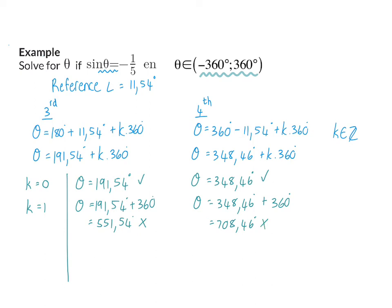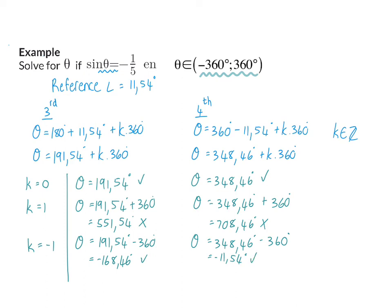We can also substitute k with negative integers. If we substitute minus one, we will subtract 360 degrees and get the options of minus 168.46 degrees and minus 11.54 degrees. Both of these are in our given interval.